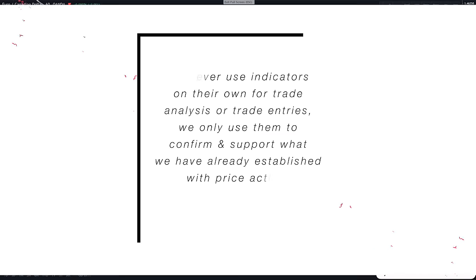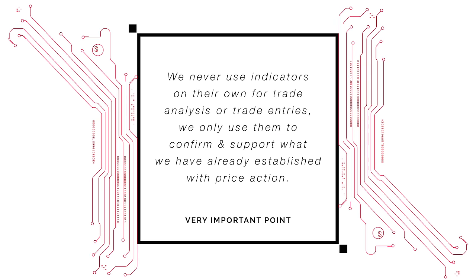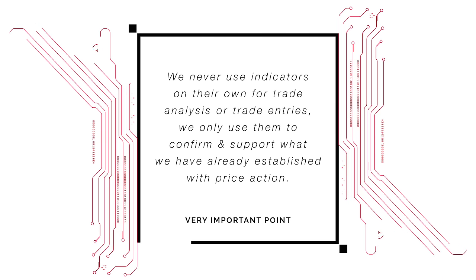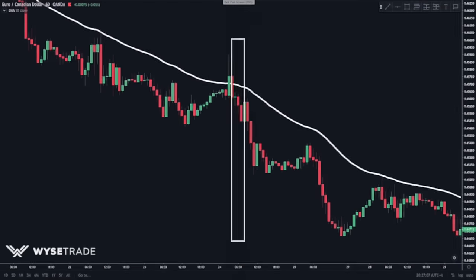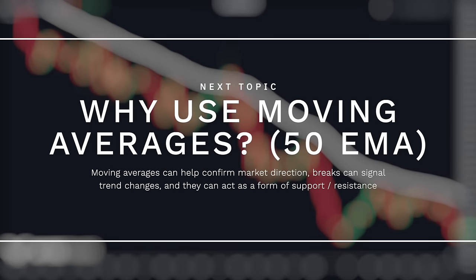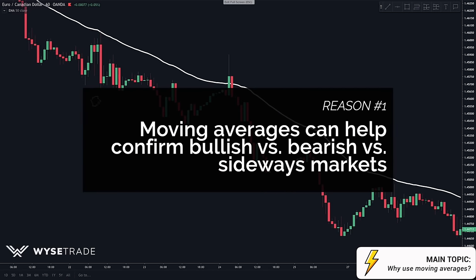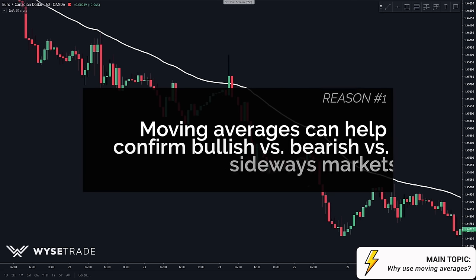This is a very key point you must understand when using indicators: we never use indicators on their own for trade analysis or trade entries. We only use them to confirm and support what we have already established with price action. So why do we use moving averages? The first reason is because moving averages can act as supporting evidence of a bullish market, a bearish market, or a sideways market.